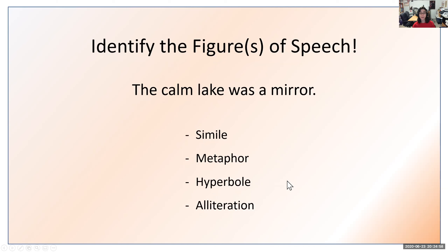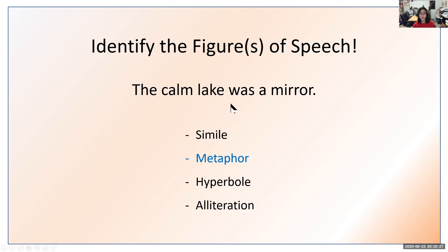'The calm lake was a mirror.' This is a metaphor — it's comparing the lake to a mirror through the connecting word 'was.' So is, was, are, am — all of those present and past tense linking words generally point to a metaphor. The calm lake compared to mirror, using 'was' as the key connecting word, is a metaphor.